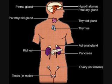Thyroid Stimulating Hormone, or TSH. Gland: Anterior Pituitary. Function: stimulates growth of the thyroid gland and secretion of its hormones.